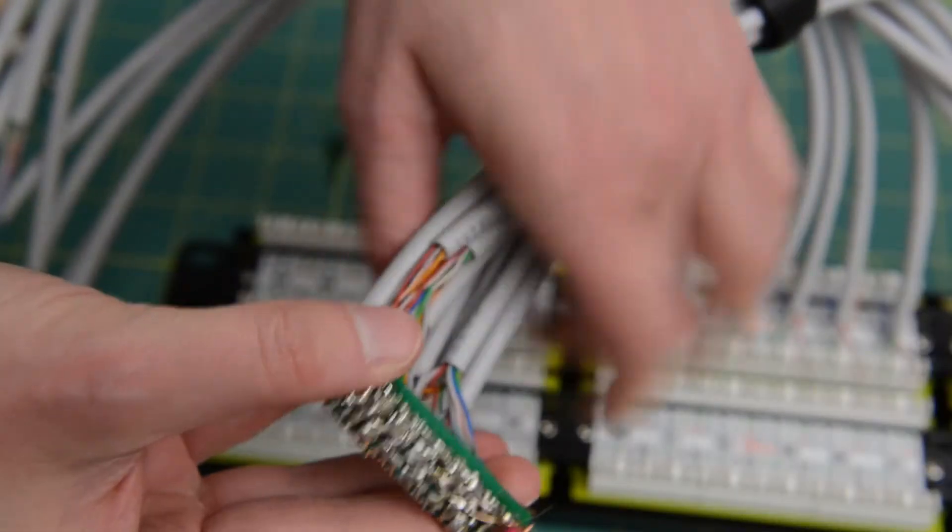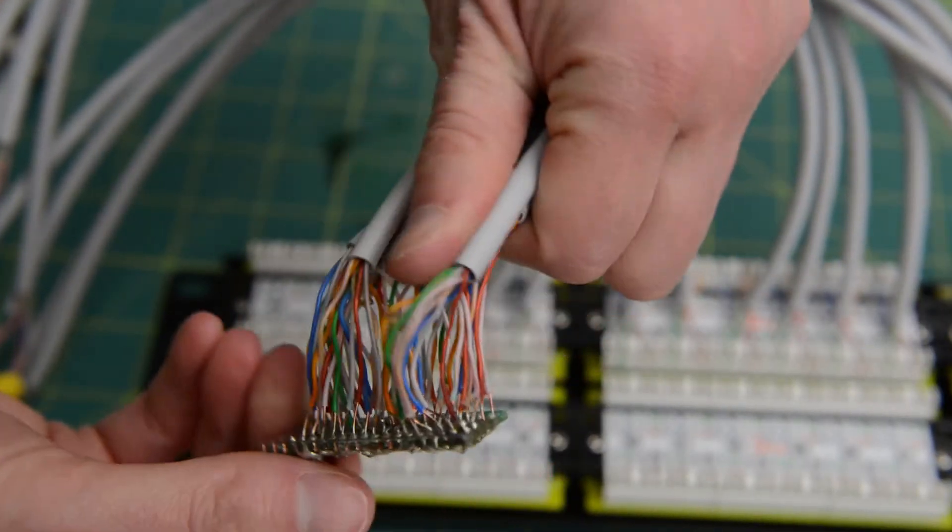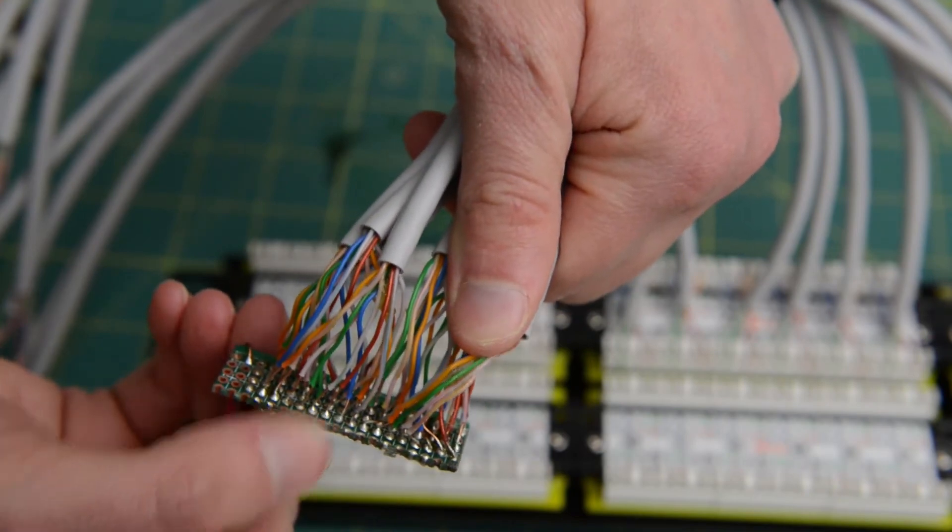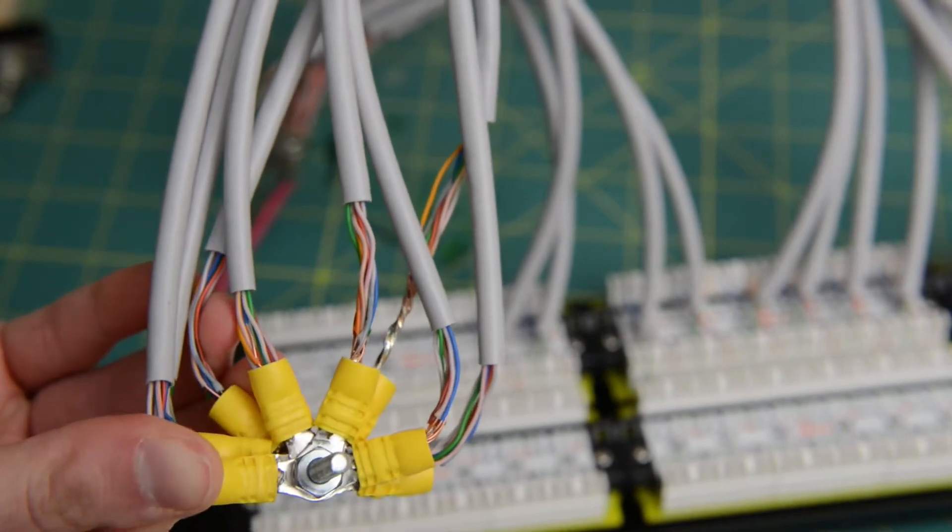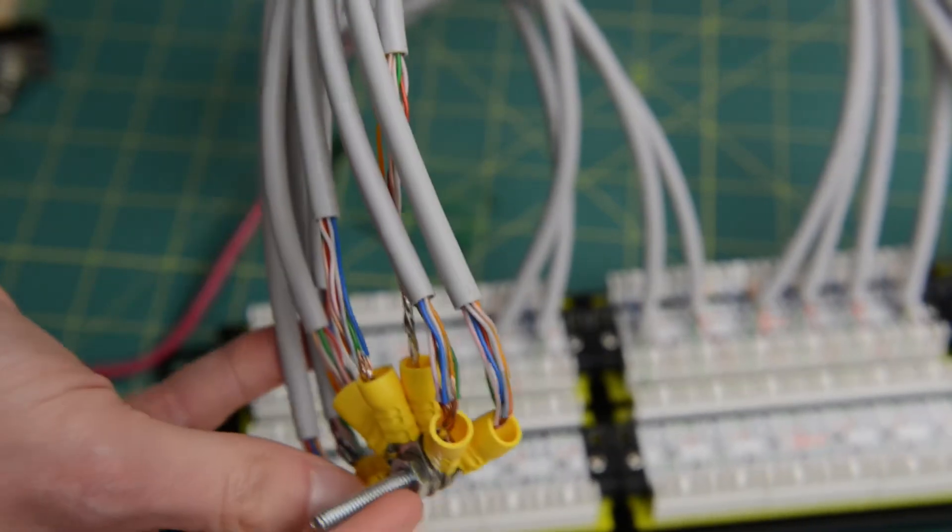We soldered all of our grounds together. We checked for continuity along the way to make sure that none of our wires were missed in the soldering. Sometimes you do a lot of extra work before you realize there's a simpler way. In this case, we could have just connected them with a screw.